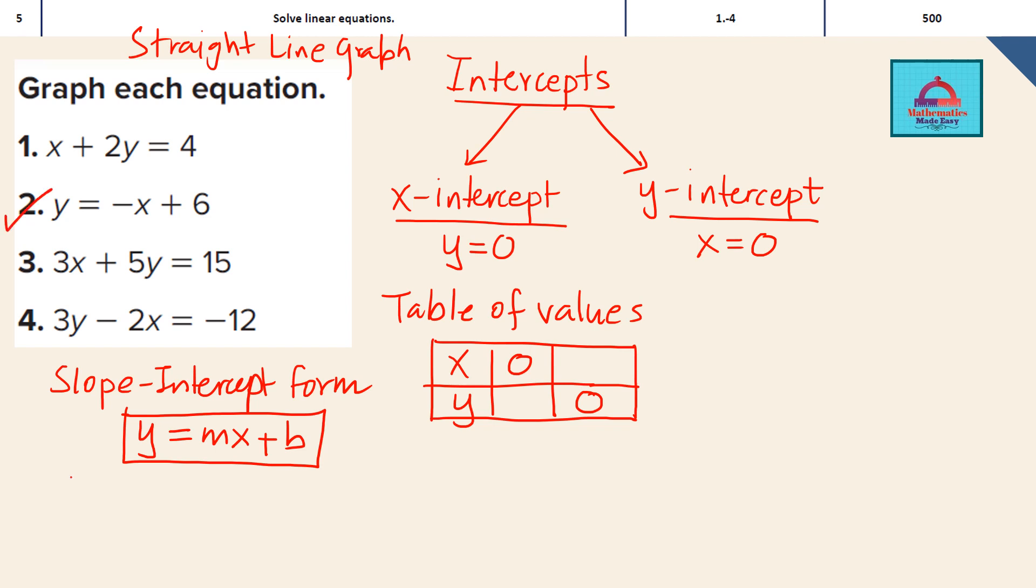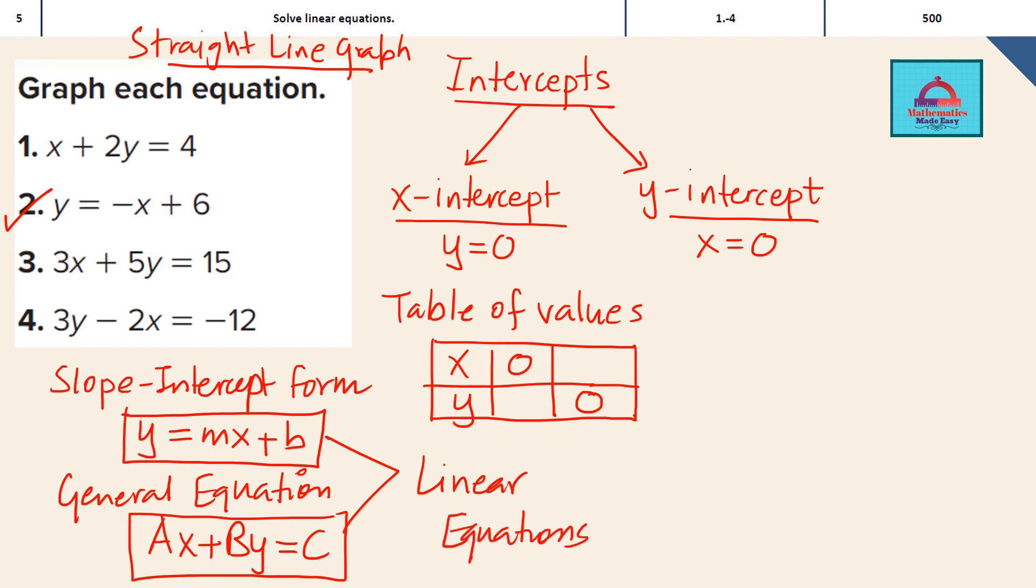Or the other form is the general equation of a straight line, which is ax plus by equal to c. So if you look at the other questions, like question 1, question 3 and question 4, they are in the general equation form. So once you have an equation given in any one of this form, you know it is going to be a straight line graph as these are going to be linear equations. So let us now see how we solve these questions using these concepts of intercepts and linear equations.